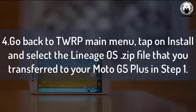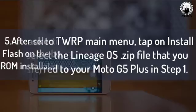Step 4: Go back to the TWRP main menu, tap on Install, and select the LineageOS zip file that you transferred to your Moto G5 Plus.